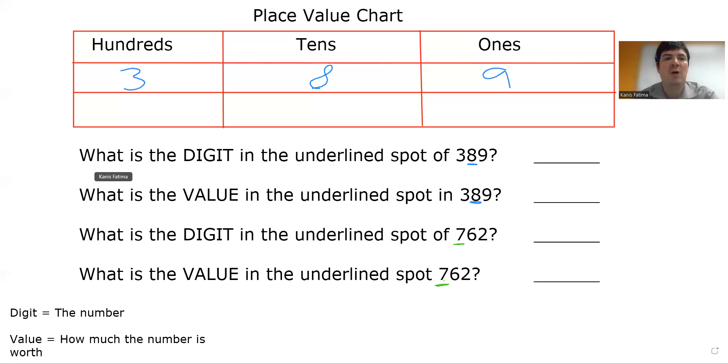The first problem asks, what is the digit in the underlined spot of 389? The digit is just asking me what the number is. So looking at my number, 389, the digit in the underlined spot is 8.